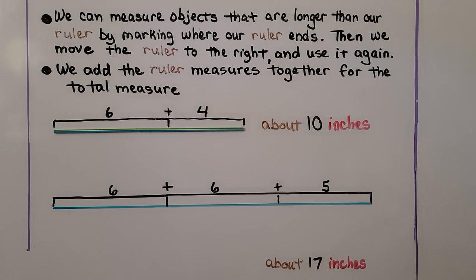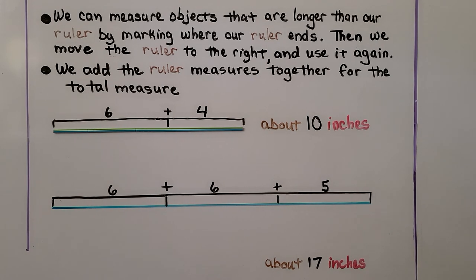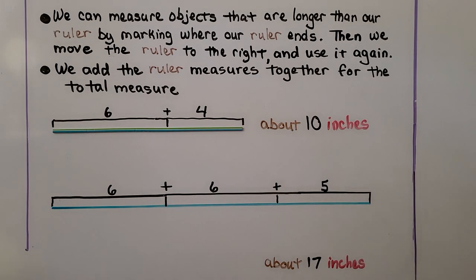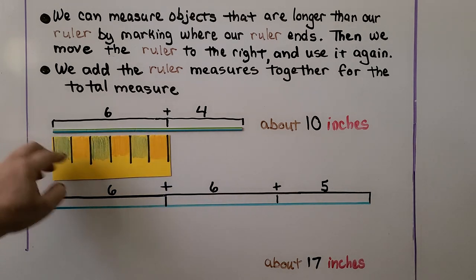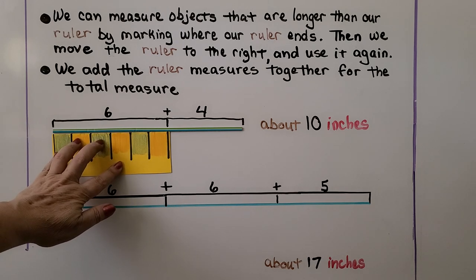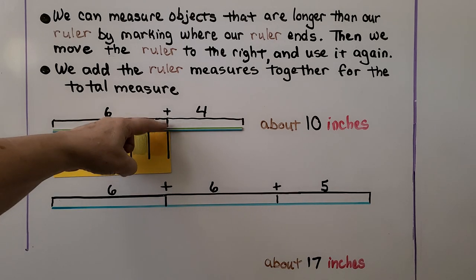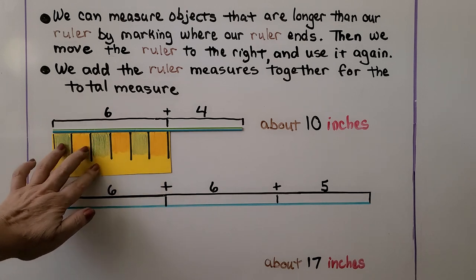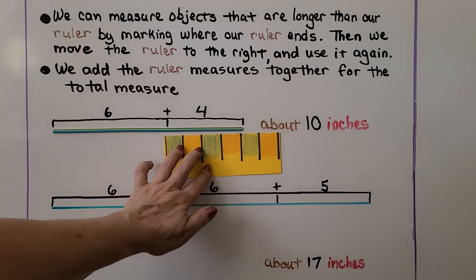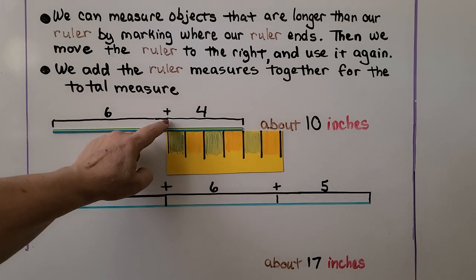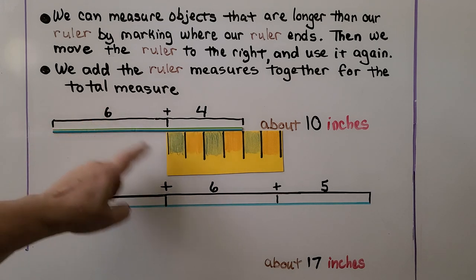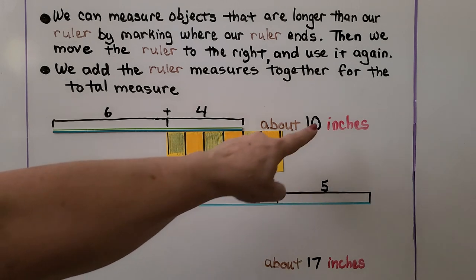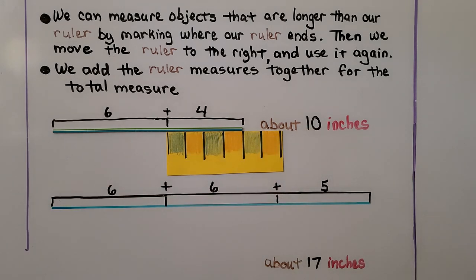We can measure objects that are longer than our ruler by marking where our ruler ends. So we would measure this. We line this up nice and straight. We mark where our ruler ends. Then we move the ruler to the right and use it again and line up that mark with the end. We know that was six and then we have seven, eight, nine, ten. So it's about ten inches.